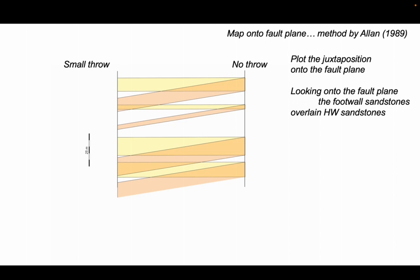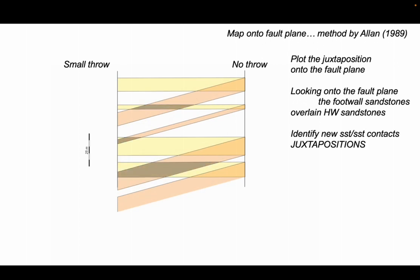And we can see that the sandstones juxtapose where the color is more intense. Let's have some more throw. So we can identify new sandstone-sandstone contacts that have been created by fault displacement, the juxtapositions. So that's a really useful way of illustrating juxtaposition, the fault plane map.